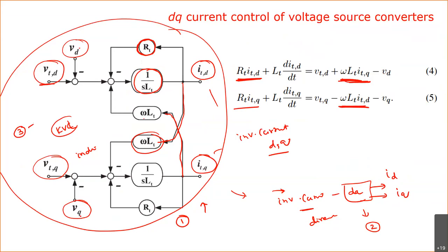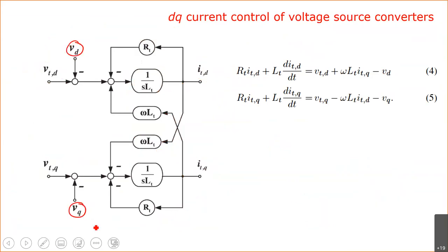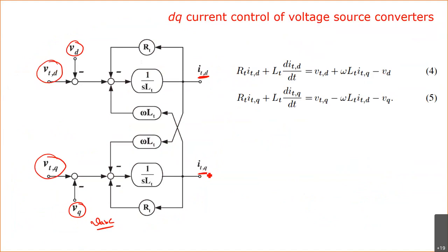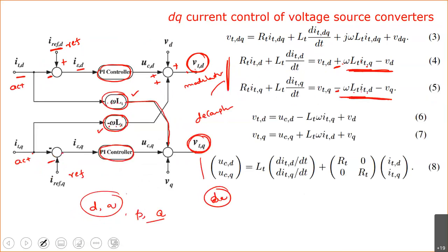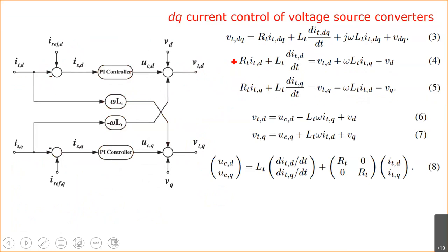We obtain V_D and V_Q from V_ABC — the grid voltages — through the DQ transformation. The inverter voltages are obtained from the feedback loop, allowing us to estimate the inverter currents. Whatever coupling is present is subtracted using these equations, which decouple I_D and I_Q — in other words, decoupling the D-axis and Q-axis. The resulting estimated inverter voltages serve as the modulating signals.